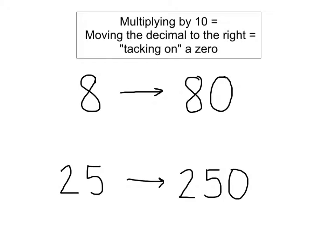We're going to use that strategy to help us do some multiplication using the powers of 10 today. The information in the box is important because what it's saying is that if you're multiplying by the number 10, it's the same thing as moving the decimal place to the right one time. And sometimes we call that tacking on a zero.